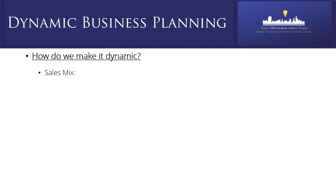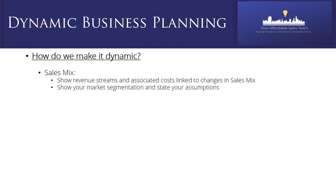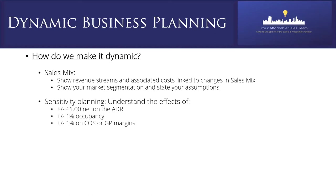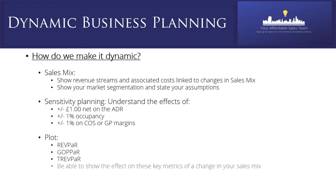Think about your sales mix. Any change in sales mix will increase or decrease income. Certain costs can be adjusted with that, but not all. You need scenarios that show the revenue streams associated with different sales mixes, show your market segmentation, and always state your assumptions. Consider sensitivity planning — understand the effects of plus or minus a pound on ADR, a percentage point on occupancy, or a percentage point on cost of sales or GP, and plot the impact on RevPAR, GOPAR, TRevPAR metrics.